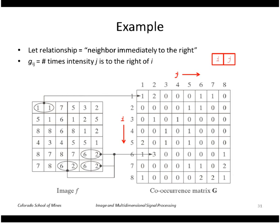Here's a simple example. Here's a small image containing eight possible intensities. I'm going to look at this relationship where I have just one pixel to the right of the other, so intensity J is to the right of I.